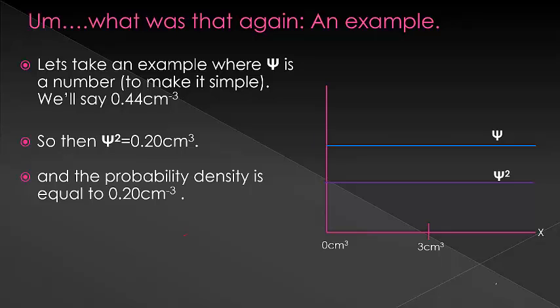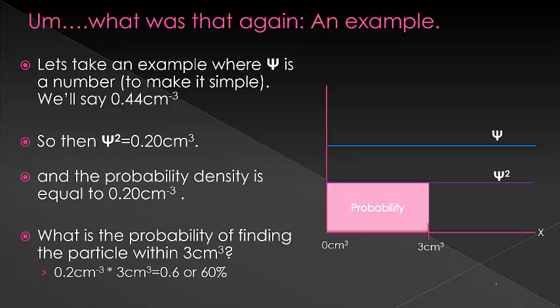Now, if we want to know the probability of finding a particle within 3 centimeters cubed, we would take the integral. Or for those of you who aren't in calculus, the area under the curve to find this value. In this case, up to 3 centimeters cubed. If we want to find that, because we can do this with a straight line pretty simply, we can do 0.2 times 3 centimeters cubed. Or a 60% chance of finding it within that area.